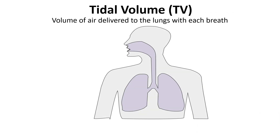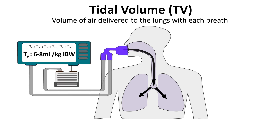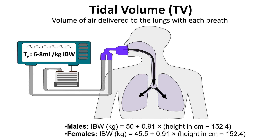Tidal volume refers to the amount of air delivered to the lungs with each breath during mechanical ventilation. The recommended tidal volume range for most patients is typically between 6 to 8 milliliters per kilogram of ideal body weight. For example, if a patient has an ideal body weight of 70 kilograms, the tidal volume would fall within the range of 420 to 560 milliliters.